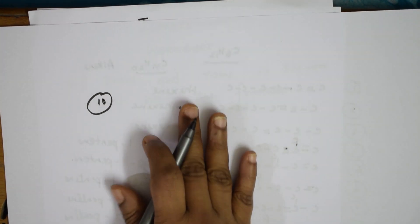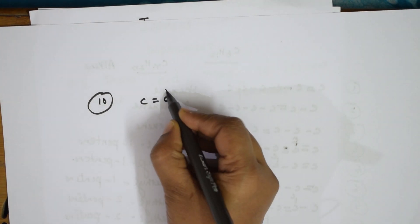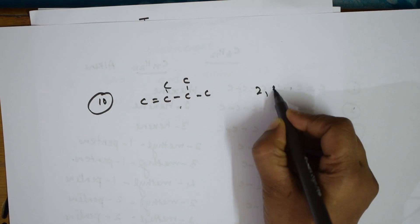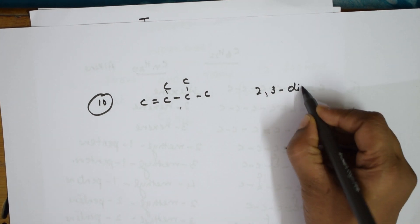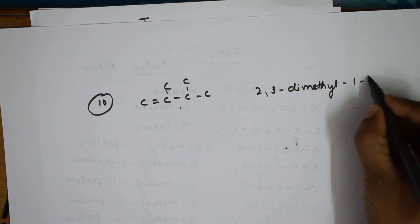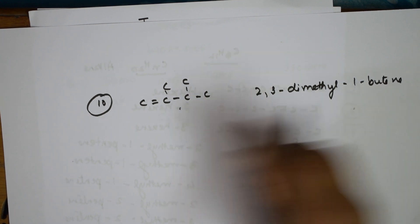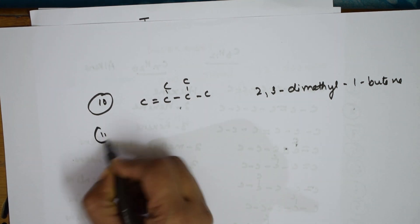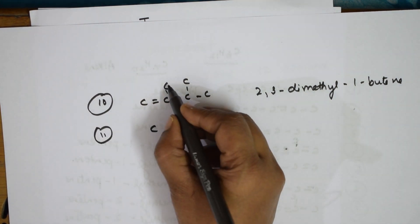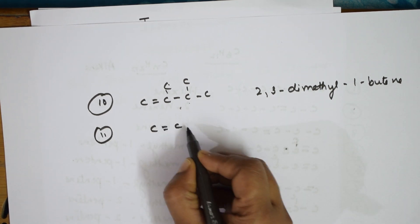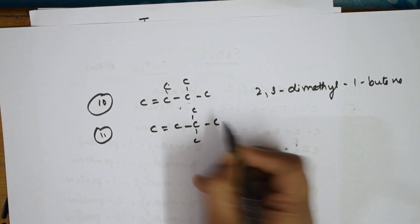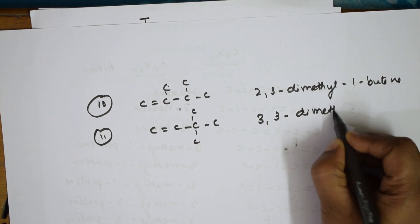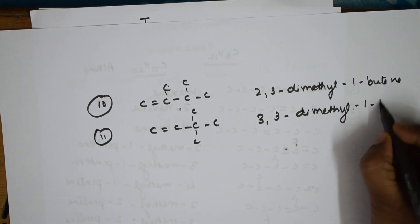Tenth isomer — now I'm shifting two methyl groups. This becomes 2,3-dimethyl-1-butene. Eleventh combination — now what am I going to do? I'm going to shift one group further, trying all possible ways. Name it: 3,3-dimethyl-1-butene.